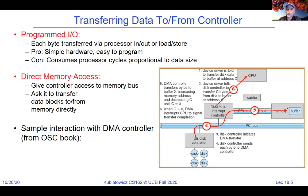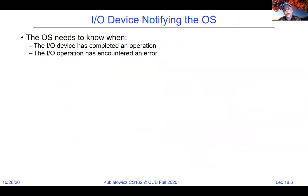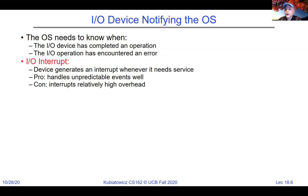Direct memory access is an important way to get really high-bandwidth communication between devices and memory, leaving the processor out of the picture. How do we find out that we're done, or that the device needs service? Examples where the OS needs to know include when a device has completed a DMA operation or when there was an error. The simple thing is for the device to generate an interrupt, which goes through the interrupt controller and causes a dispatch to an interrupt handler.